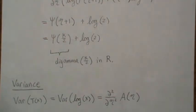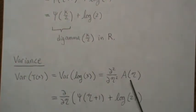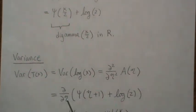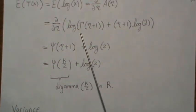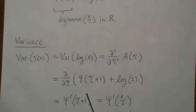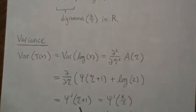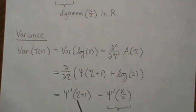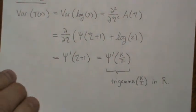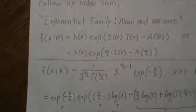The variance of our sufficient statistic — the variance of the log of x — is the second derivative of our log partition with respect to eta. We calculated the first derivative up here, expressed in terms of eta, and now we take the derivative of that to get the second derivative. The second derivative of the log of a gamma is called a trigamma, or you can think of it as the derivative of a digamma. This is constant with respect to eta, so we plug in k over 2 minus 1 and we get a trigamma of k over 2. There's an R function called trigamma, and that's the variance of the log of x — that's the mean and the variance of the chi-squared distribution.